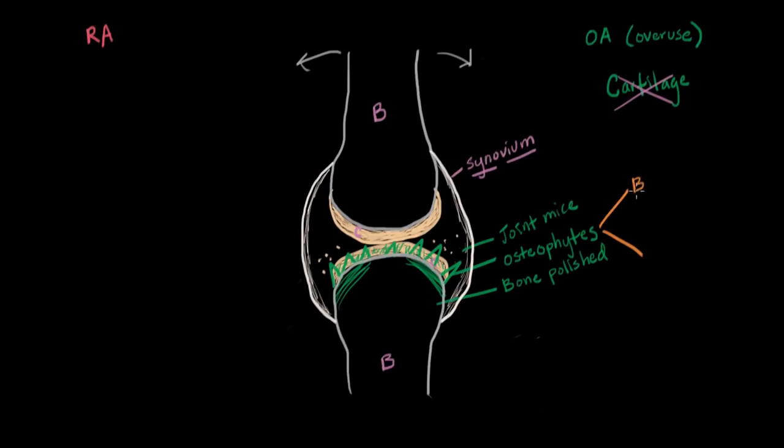One, we call it Bouchard's nodes. And these are going to be in the fingers, but specifically in the PIP joint, the proximal interphalangeal joint. So proximal means closer to the center of the body. So this is going to be the second to last knuckle on the fingers.